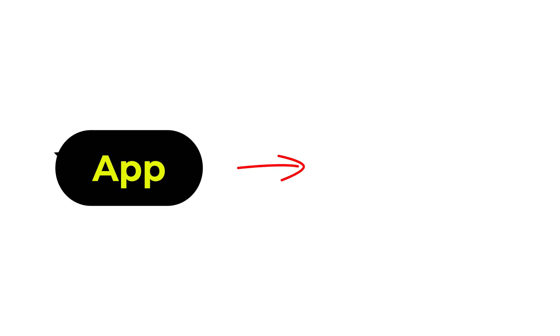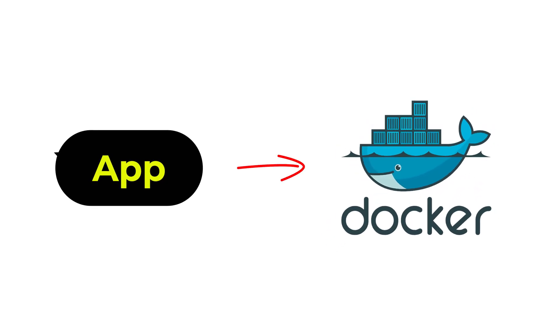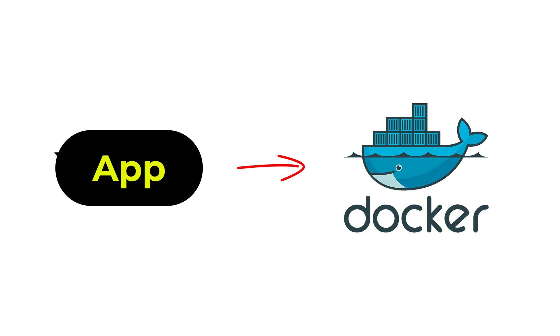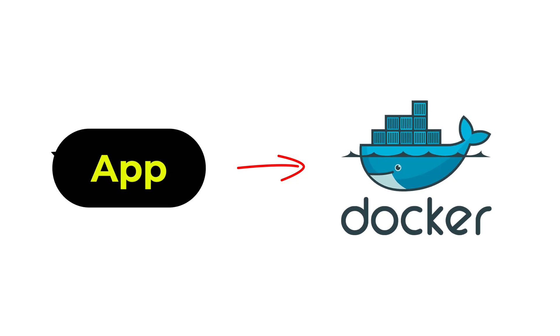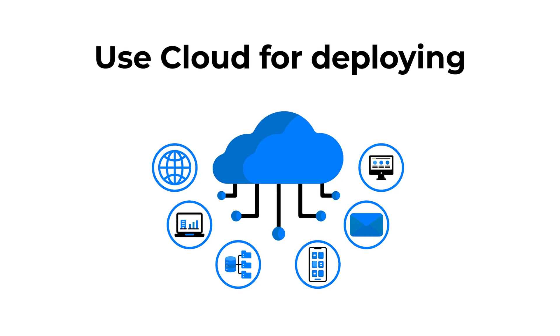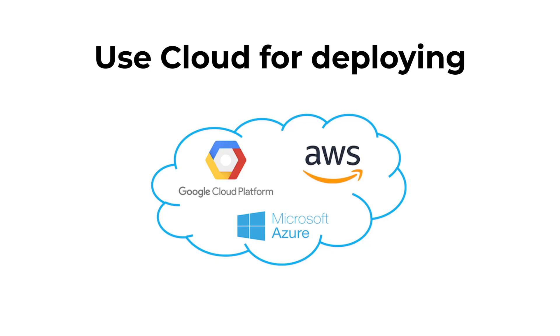Suppose you have a computer vision app — the next step is Docker. It makes your apps portable and easier to deploy across different environments. Another option is to use cloud platforms like AWS, GCP, and Azure.